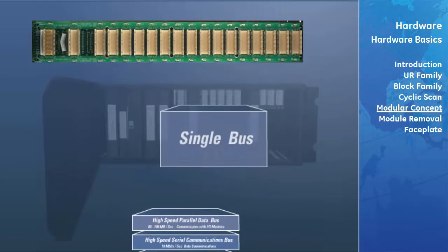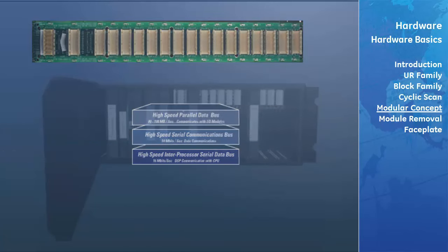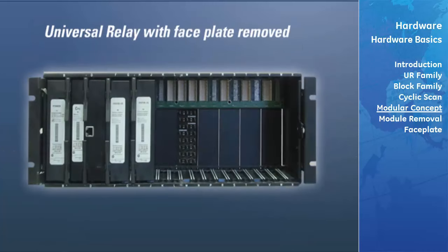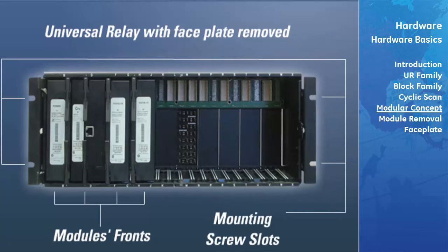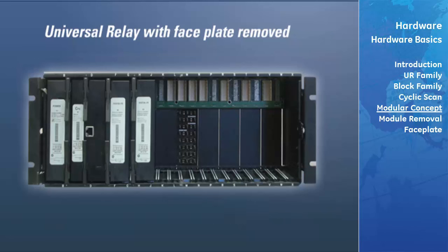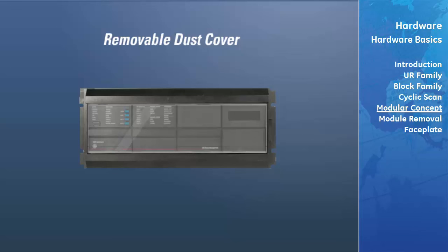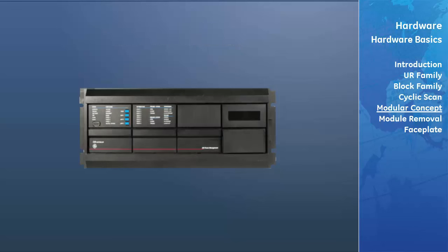This architecture eliminates bottlenecks when a lot of data is being transferred, resulting in high-performance communication without affecting the performance of the protection elements. This is the front view of a horizontal universal relay with the faceplate removed, showing the fronts of the modules and the four mounting screw slots. The modular design allows the relay to be easily upgraded or repaired. The faceplate is hinged to allow easy access to the removable modules, and is itself removable to allow mounting on doors with limited rear depth. The relay is a 4RU 19-inch rack configuration.